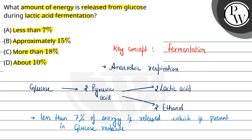So question mein poocha hai what amount of energy is released from glucose during lactic acid fermentation. Toh jab lactic acid ki formation hoti hai from pyruvic acid, ise kehte hain lactic acid fermentation, aur yahan pe less than 7% of energy release hoti hai jo glucose molecule mein present hoti hai. First option — less than 7% — ye correct hoga. Approximately 15% — incorrect. More than 18% — bhi incorrect. So the final answer here is Option A, that is less than 7%. Hope you understood it well, best of luck.